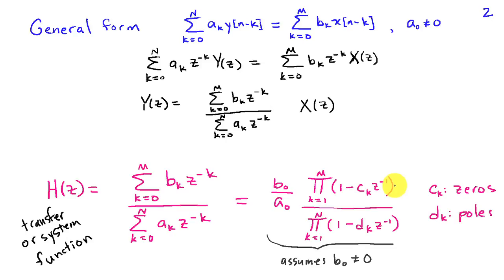Poles and the zeros are equivalent characterizations for the system, as are the coefficients of the difference equation. There's a one-to-one relationship between those.